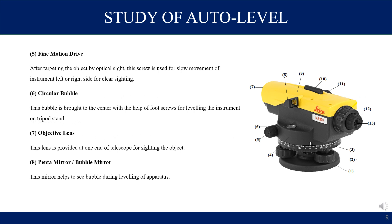Fine motion drive: after targeting the object by optical sight, this screw is used for slow movement of the instrument left or right for clear sighting. When you have seen the object and want the instrument to move slowly, you rotate it using the fine motion drive for clear sighting so the object is visible clearly.